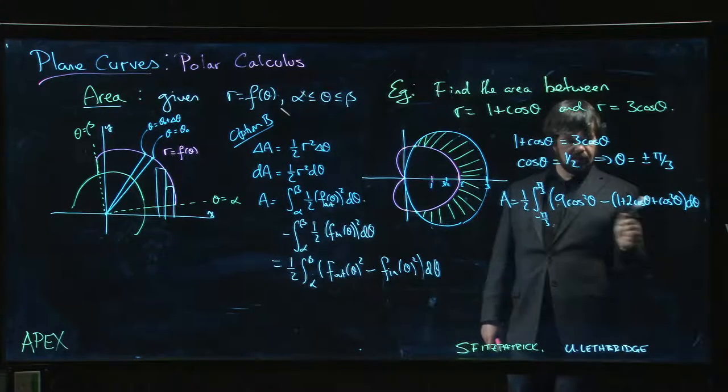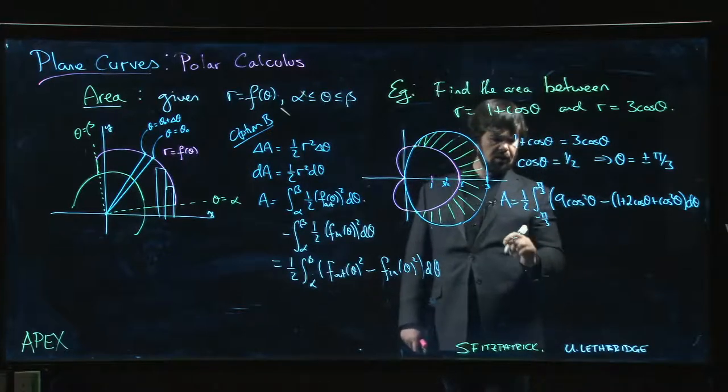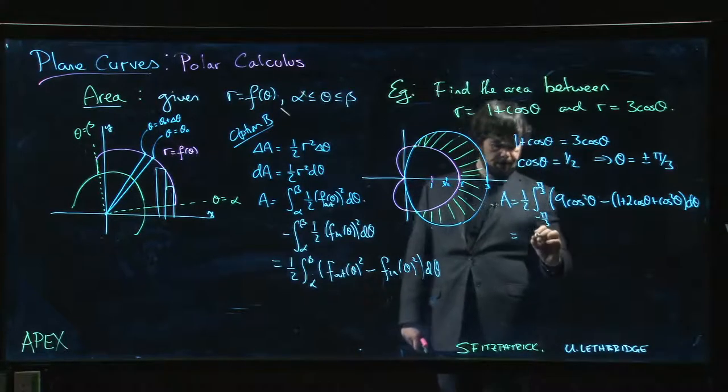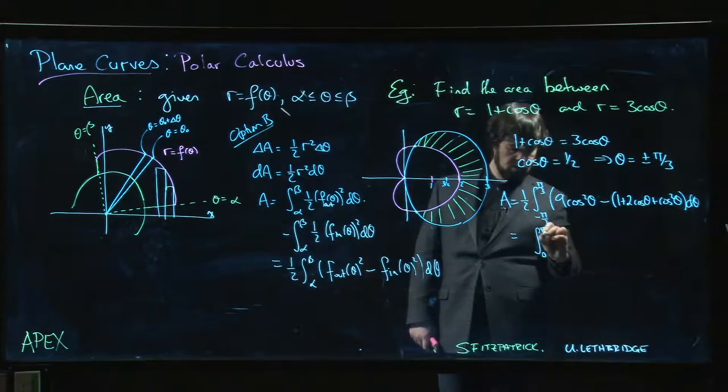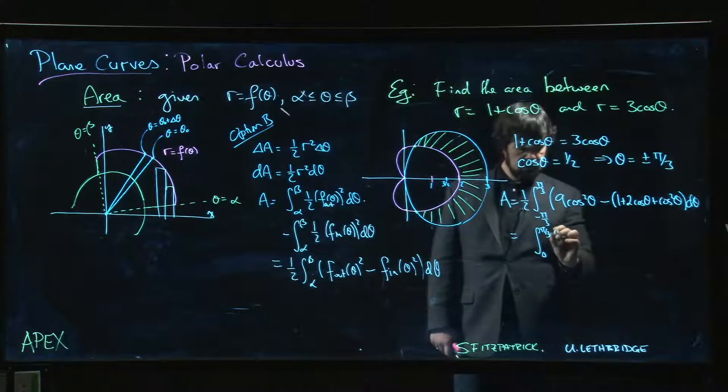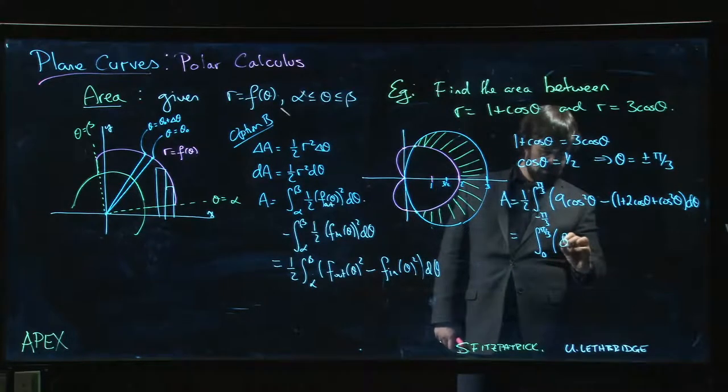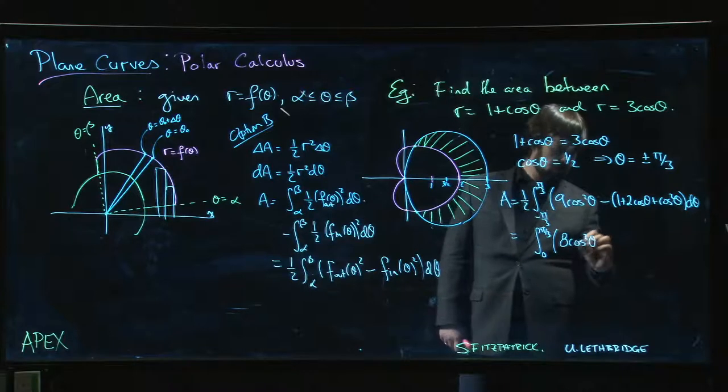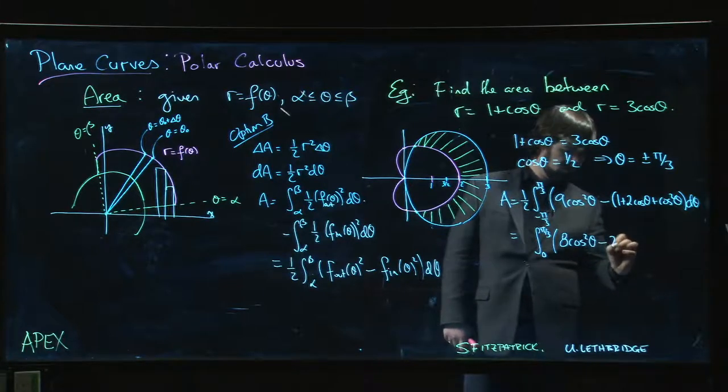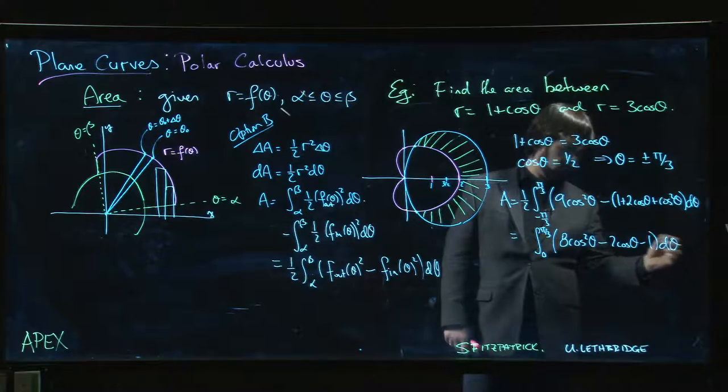Notice that everything here is even. Cosine's an even function. So as we're simplifying, one of the things we can do is we can go from zero to pi over three using symmetry. Doubling gets rid of the one half. And now let's clean up inside. Nine cos squared minus cos squared, we have eight cos squared theta minus two cos theta minus one.